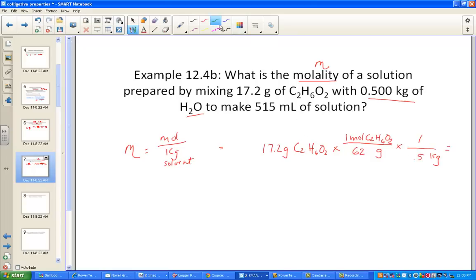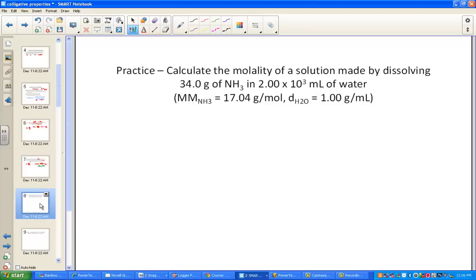We'll write out 17.2 grams of C2H6O2. We do a mole map conversion to convert to moles. The molar mass is 12 times 2 plus 6 plus 32, which is 62 grams. Moles of solute per kilogram of solvent, already provided 0.5 kilograms of solvent. The unit gram cancels and we have mole per kilogram, which is the definition of molality. 17.2 divided by 62 divided by 0.5 gives 0.55 molal solution.